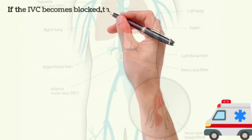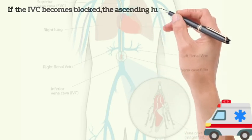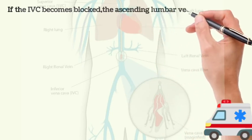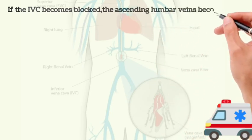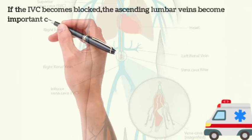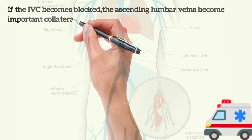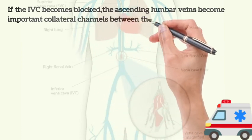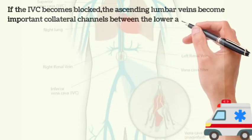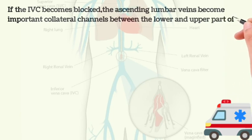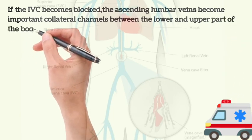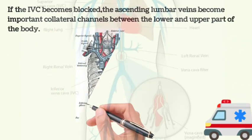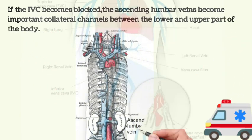If the inferior vena cava becomes blocked, the ascending lumbar veins become important collateral channels between the lower and upper parts of the body. That was all for today's lecture — thank you.